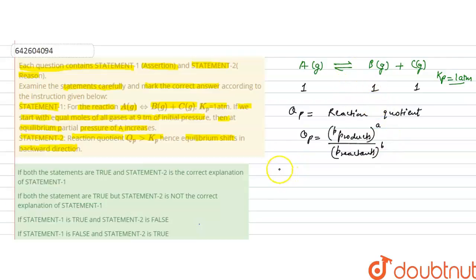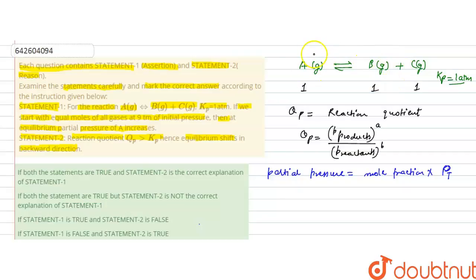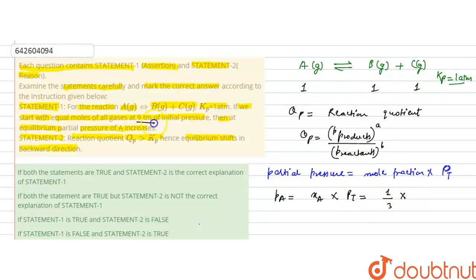The partial pressure is calculated as mole fraction multiplied by total pressure (P total). The mole fraction is the number of moles of that species divided by the total number of moles. So the partial pressure of gas A equals the mole fraction of A — which is 1 mole out of 3 total moles — multiplied by the total pressure of 9 atmosphere, giving 3 atmosphere.